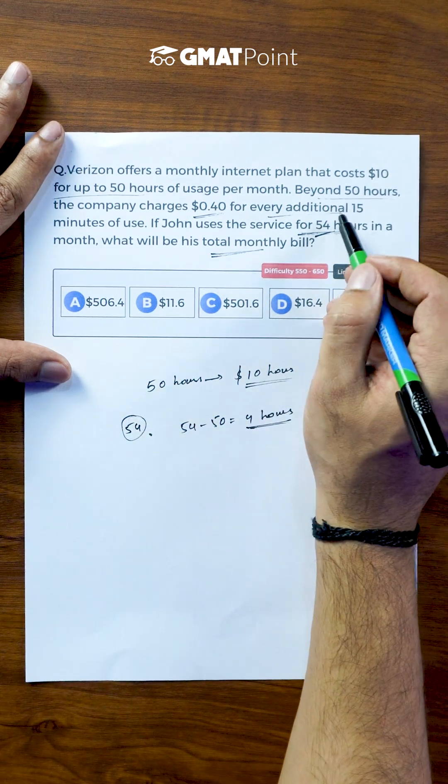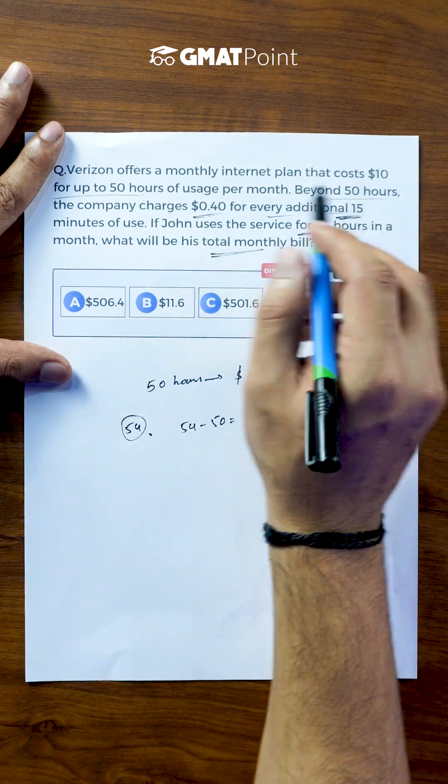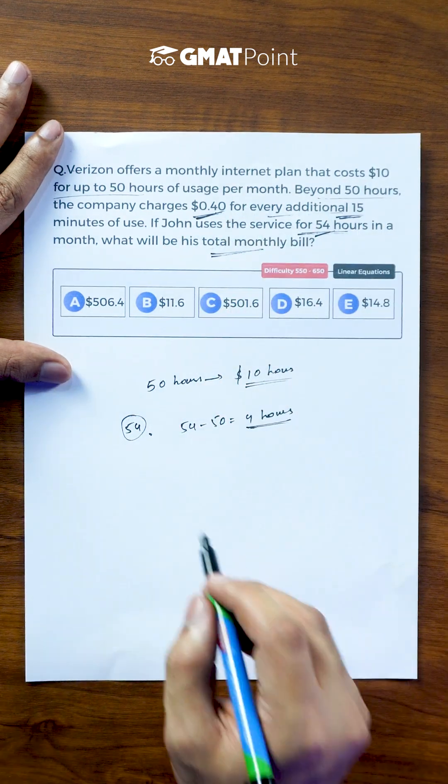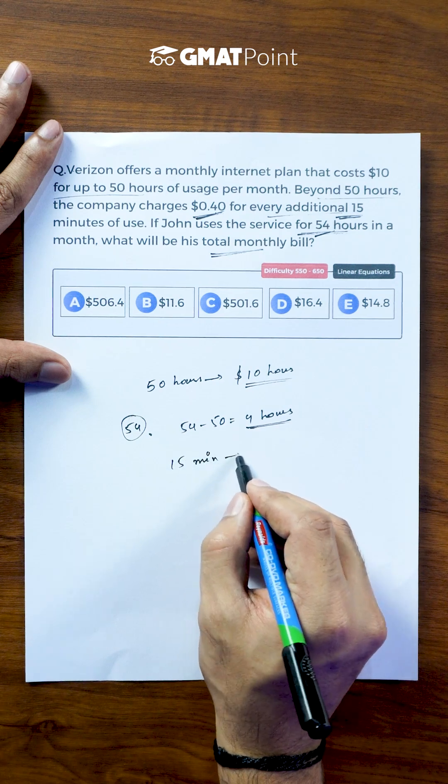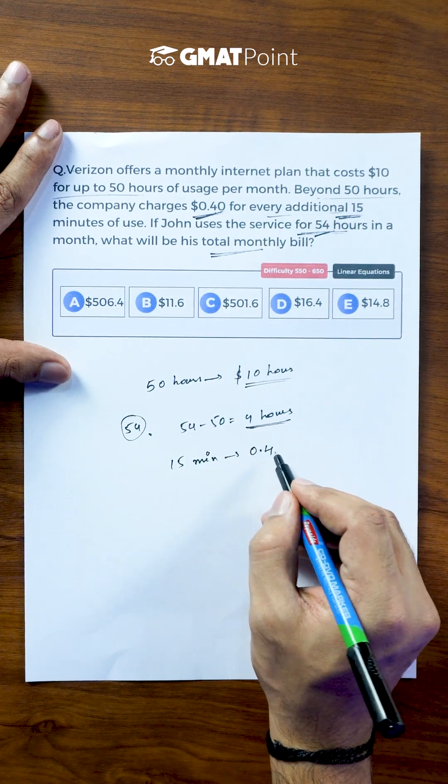Upon extra usage, we are told that for every 15 minutes a charge of $0.40 is being added. So for every 15 minutes, the extra charge is $0.40.